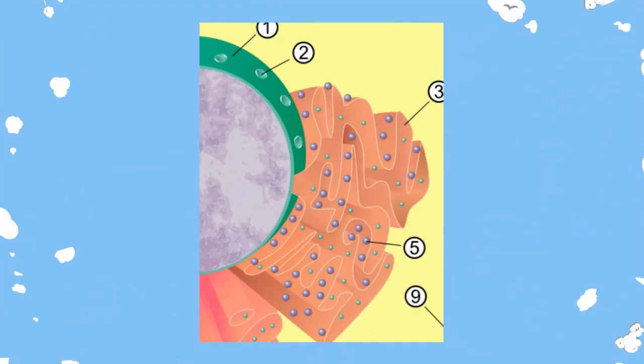Let's look more closely at the function of the endoplasmic reticulum. First there are two types of ER, rough and smooth.